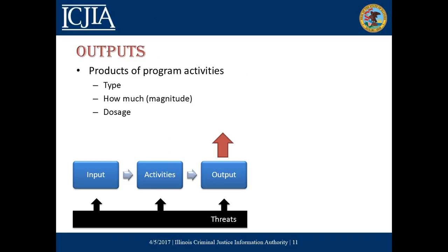Outputs are the products of the program activities. They can include the type, how much or the magnitude engaged in, and the dosage. For instance, if your program is about training others in the community, then the activity would be the training and the output would be the number of trainings completed, the number of people who attended those trainings, the types of people that went to those trainings, and how long those trainings might be.